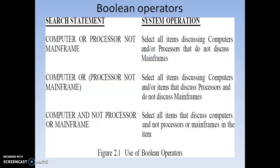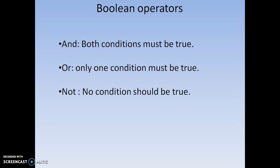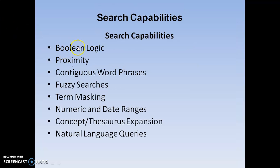Whenever we use AND, both conditions must be true. Whenever we use OR, any one of the conditions must be true. Whenever we use NOT, that condition is not at all allowed. Like that, the Boolean operators can be implemented in the search capabilities. This is the first type we have completed.